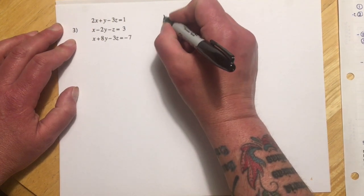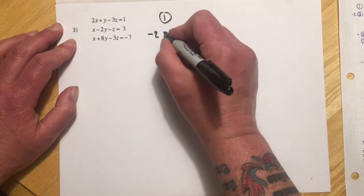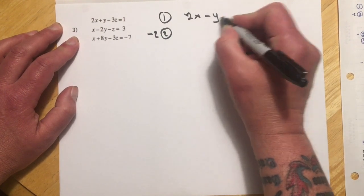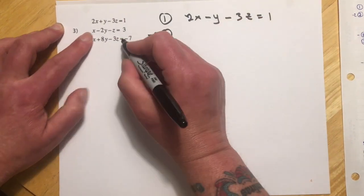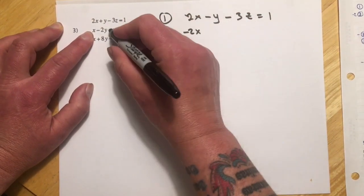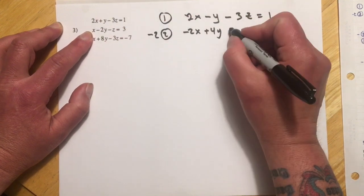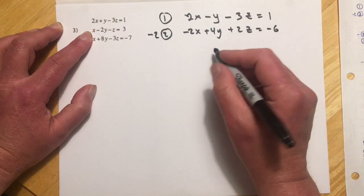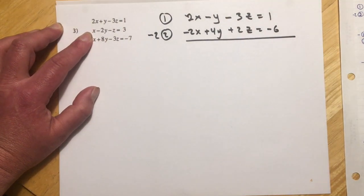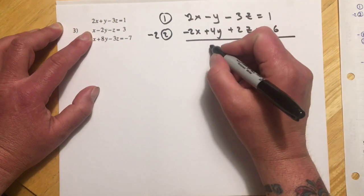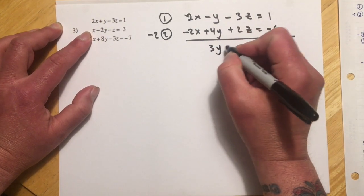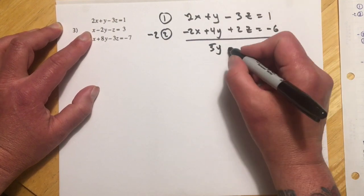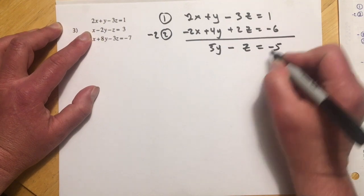So I'm going to go equation one, and we go negative two times equation two. So that would be 2x minus y, 3z and 1, and then negative 2x, negative negative, so 4y plus 2z equals negative 2 times 3 would be negative 6. And then adding those together, these drop out, and I get 3y. That should be a plus. Sorry, 5y. And then minus z equals negative 5.